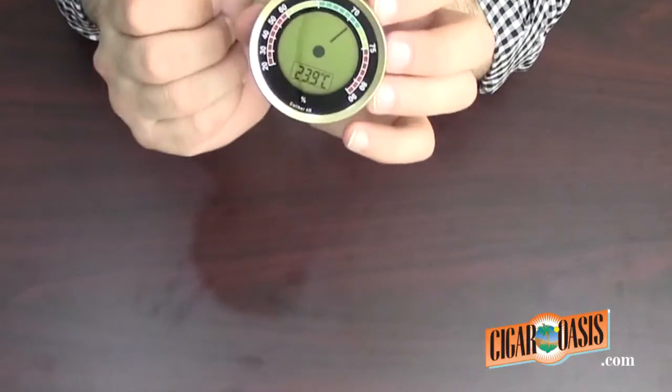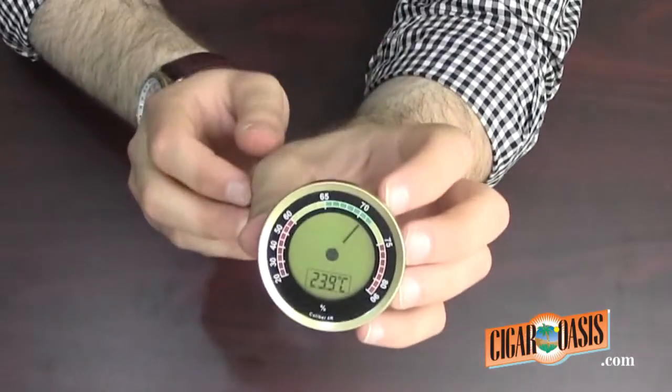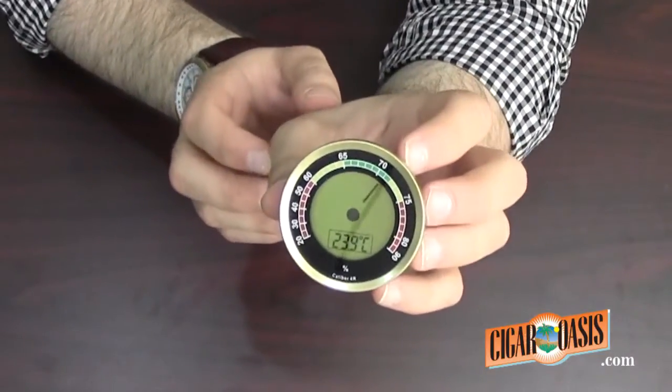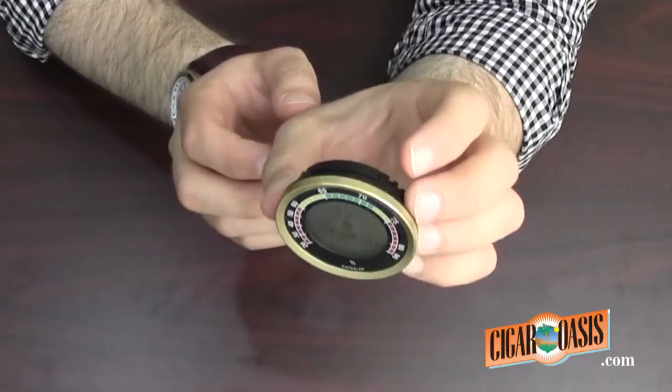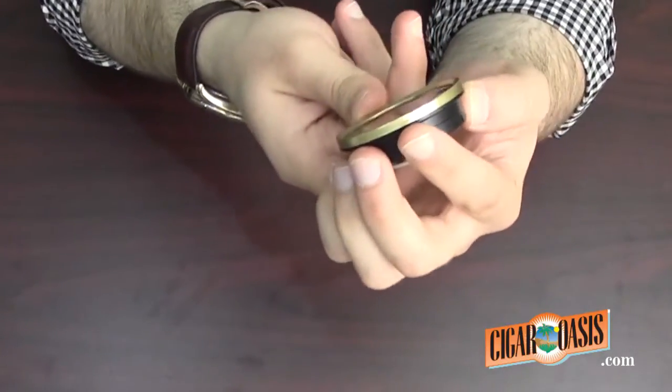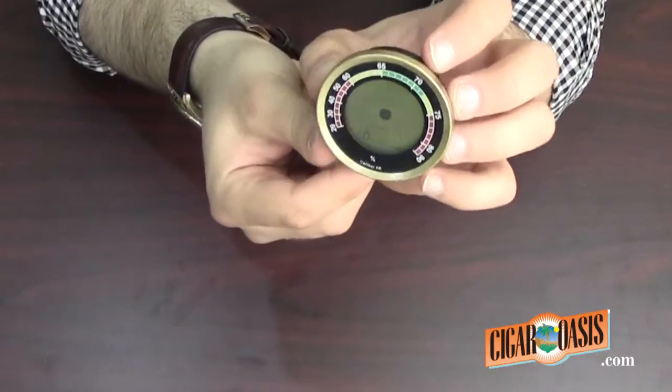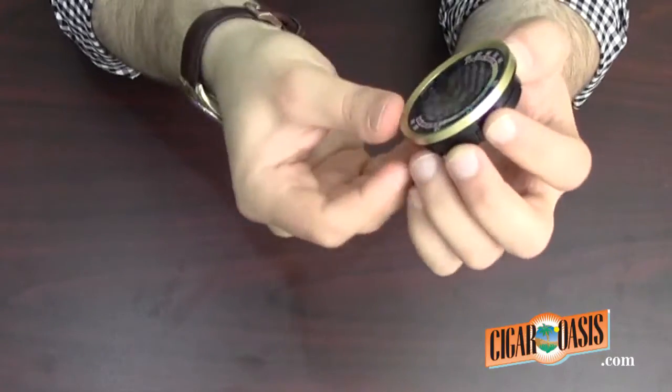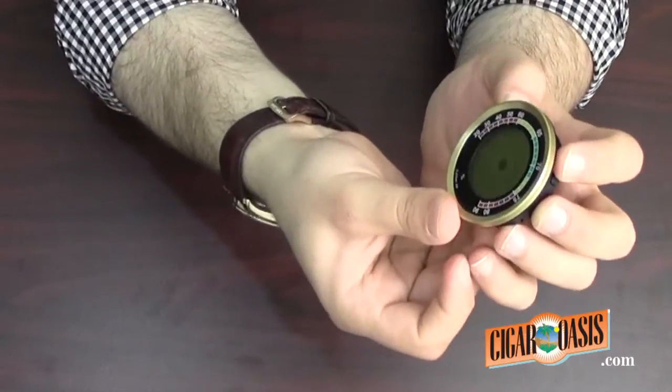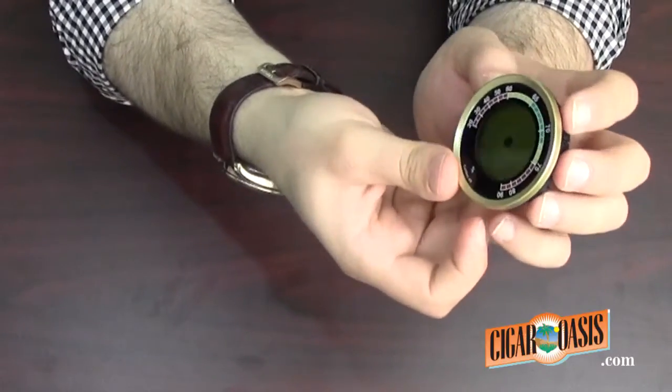If you feel it was reading too high and you want to lower the reading, same process: set button for three seconds, and this time we'll wait till we see the minus sign and then set to save.